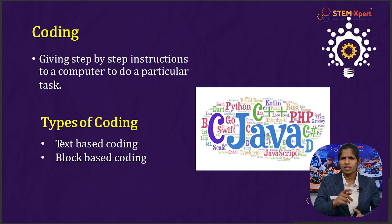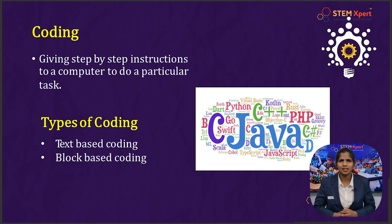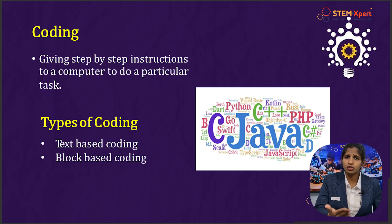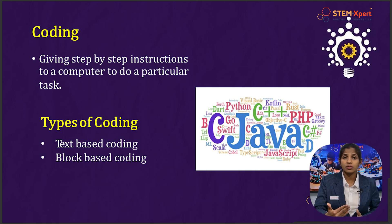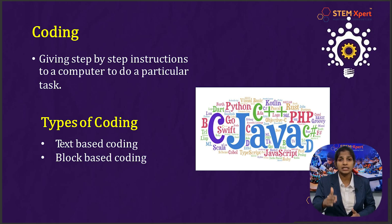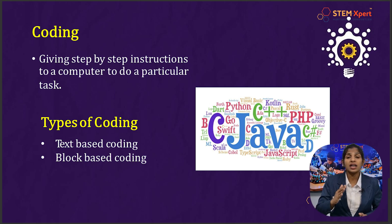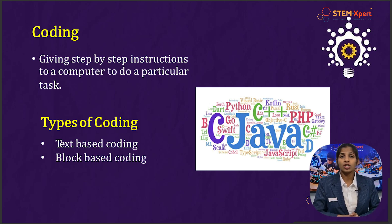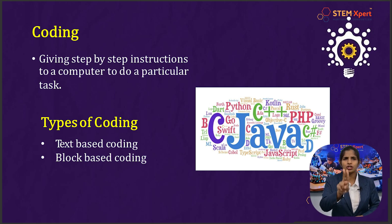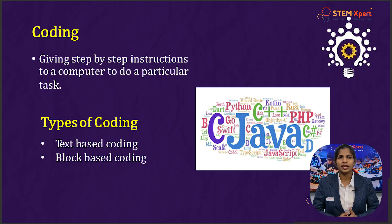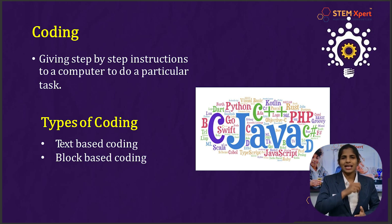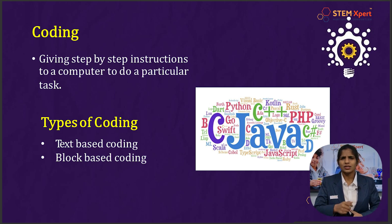Now let's see what coding is. If the computer has to do a particular task, we give it a set of step-by-step instructions — this is called coding. Coding means step-by-step instructions given to a computer to perform certain tasks. Coding is of two types: block-based coding and text-based coding. Beginners like you will be following only block-based coding.